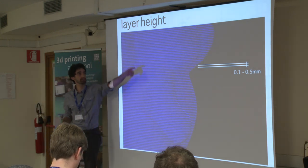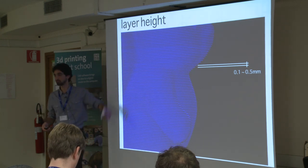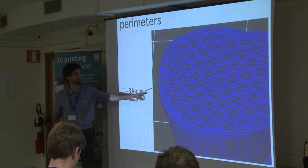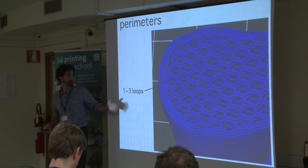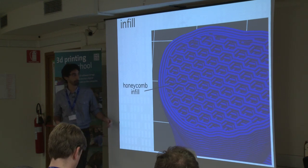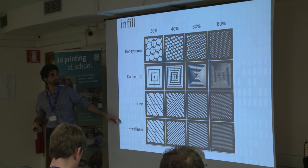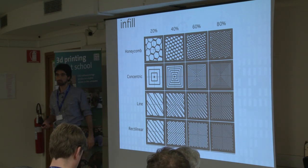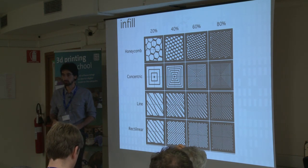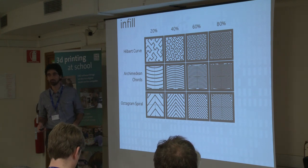The main setting is layer height, which controls how thick the layers are - how much the printer goes up before depositing the next one. That is the usual range depending on your free time and desired quality. Then there are perimeters - how many external loops you want, usually between one and three. They give good smoothness to the object. Then you decide the infill pattern and density. These are the available patterns, each at several densities, chosen according to mechanical or aesthetic requirements. If you have transparent filament, these internal patterns are visible.